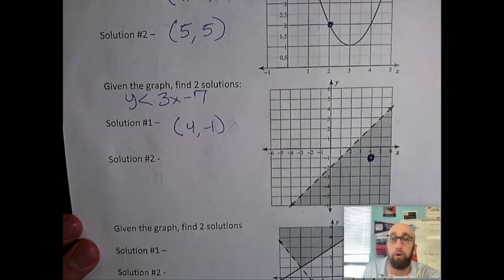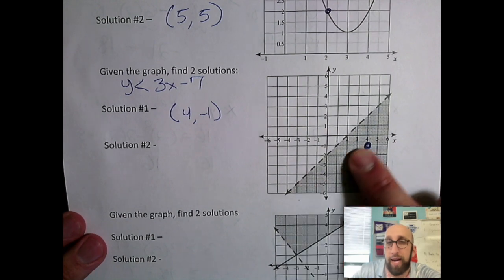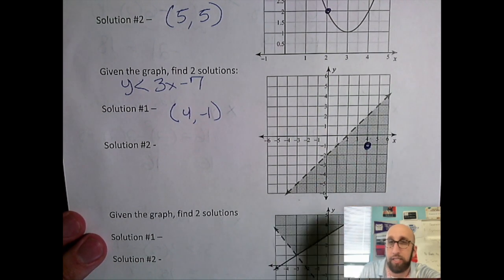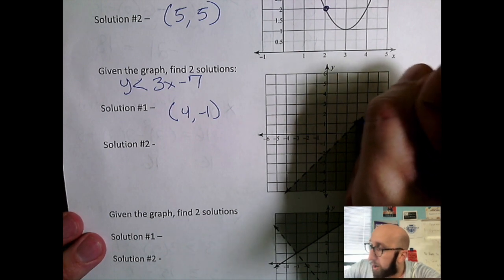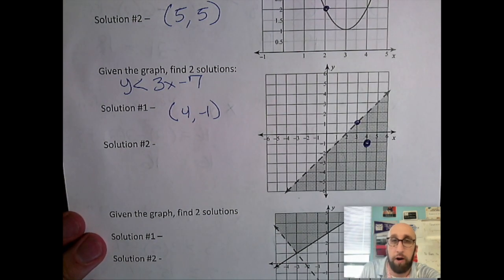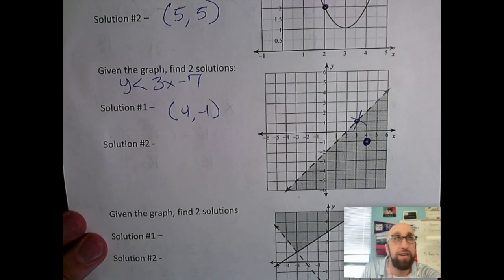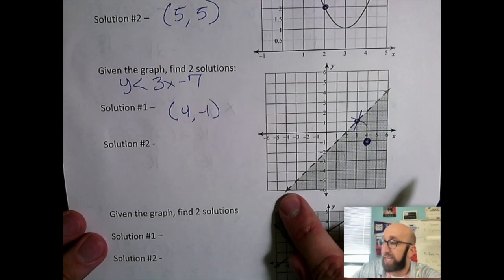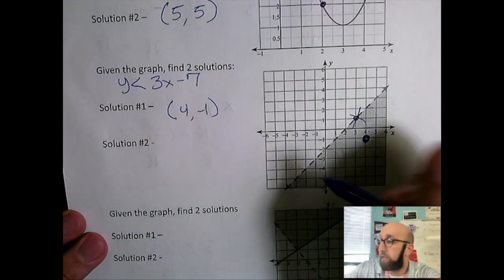Now I want to talk about something here. When you have a dashed line like this, a common question is: what about points right on the line? Here's the deal: when you have dashed lines, these are not solutions to this inequality. If it was a solid filled-in line, anything on the line is a solution. So since it's a dashed line...